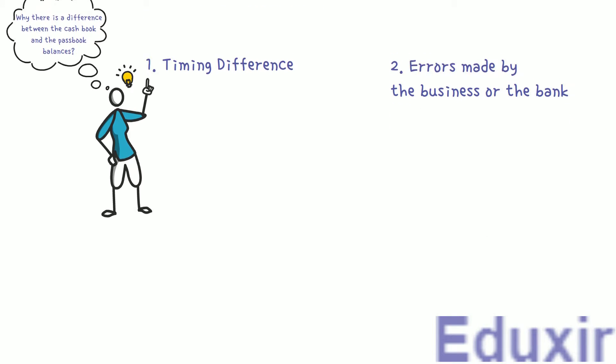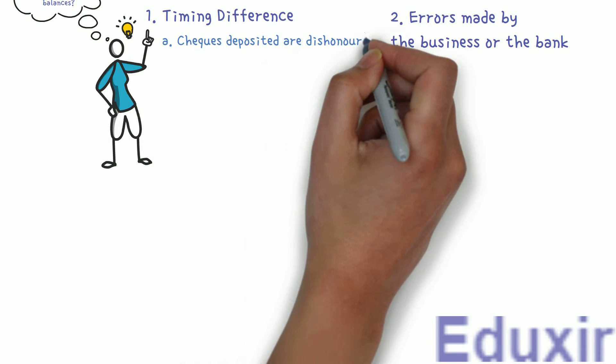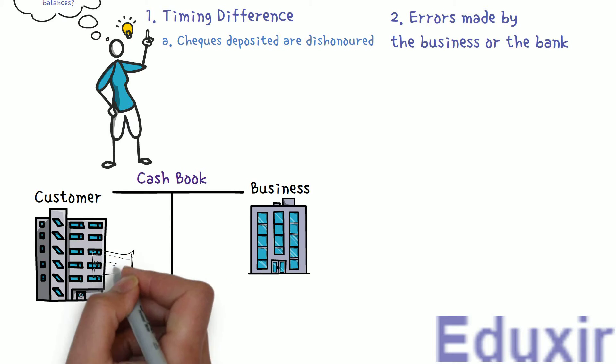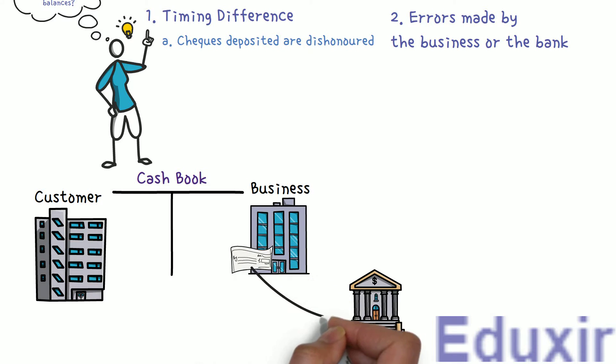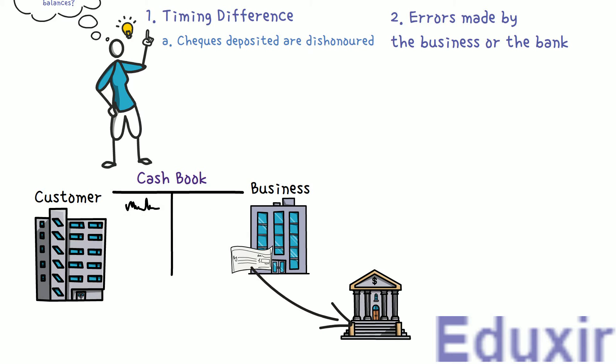One reason for timing difference is when cheques deposited are dishonored. When the cheque is received by the business, it deposits this cheque in the bank and debits the cheque amount in the bank column of the cashbook. In some cases, this cheque will be dishonored and the amount debited in the bank passbook. Due to the timing difference, the business does not know about the cheque being dishonored, so there will be no entry for the dishonored cheque. As per the cashbook, the cheque is successfully encashed, but as per the passbook, the cheque is dishonored.